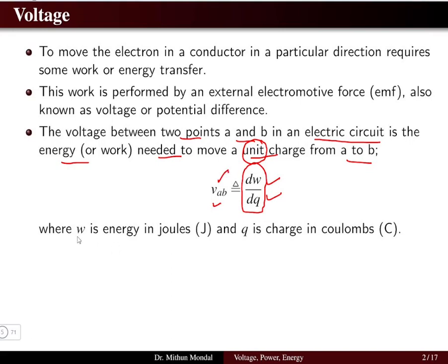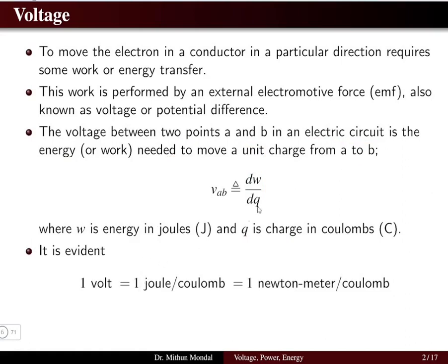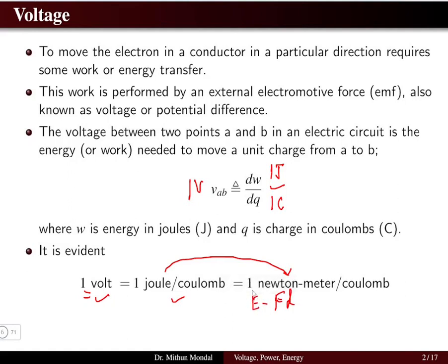The unit of W, which is the energy, is in joules, whereas the unit of charge Q is in coulombs. From this equation, 1 volt will be equal to 1 joule per 1 coulomb. Since energy can be written in terms of force times distance, 1 volt equals 1 joule per coulomb, which equals 1 Newton meter per coulomb.